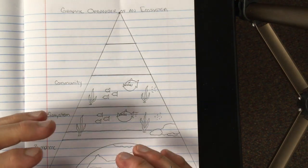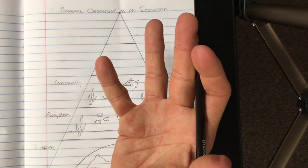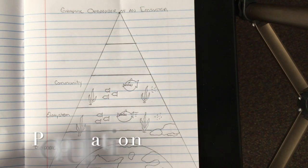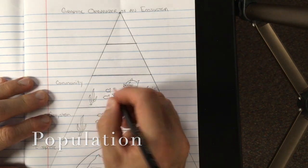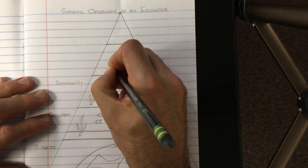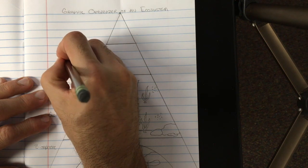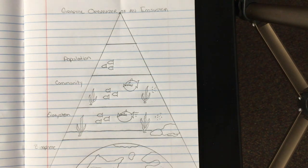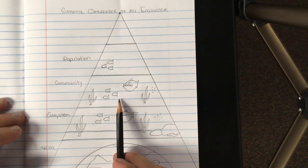So we've got the ecosystem with abiotic and biotic parts. Now we have the community — it's just all the biotic parts, all the living parts. Now you can break up a community into individual populations. A population is all of one type of species in that ecosystem. So in this case I'm going to use the fish and draw them. Sorry Biff, you're getting left out of this one. So there's my population. A population is all of one type of species in an ecosystem, and all the populations make up the community.